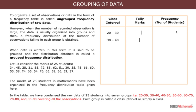30 to 40, 40 to 50, 50 to 60, 60 to 70, 70 to 80, and 80 to 90, covering all the observations. Each group is called a class interval or simply a class.